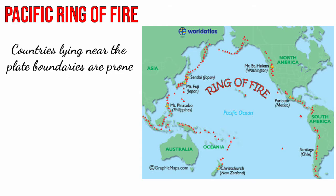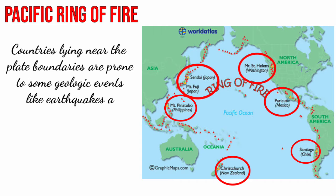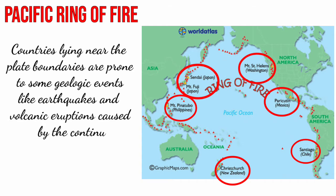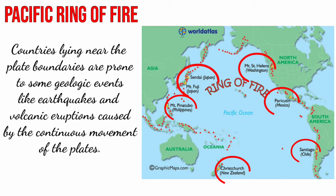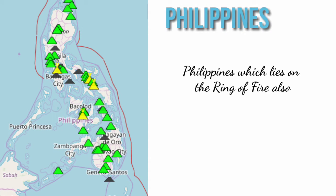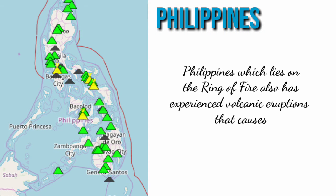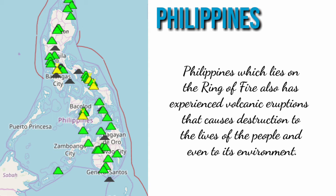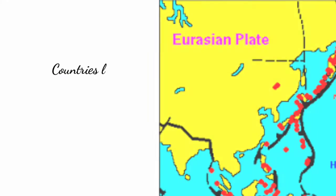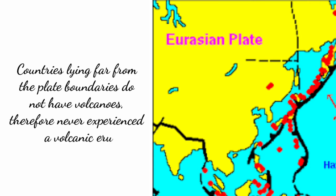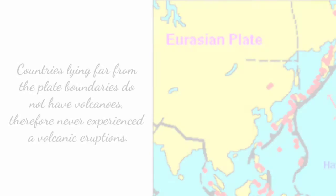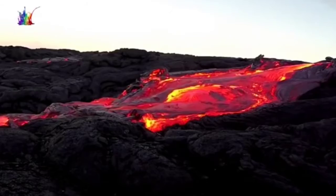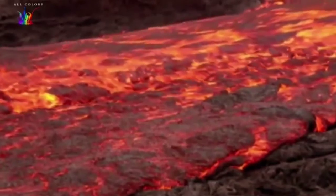Countries lying near the plate boundaries are prone to geologic events like earthquakes and volcanic eruptions caused by the continuous movement of the plates. The Philippines, which lies on the Ring of Fire, has also experienced volcanic eruptions that caused destruction to the lives of people and its environment. Countries lying far from the plate boundaries do not have volcanoes and therefore have never experienced a volcanic eruption. And that's the end of Lesson 2.